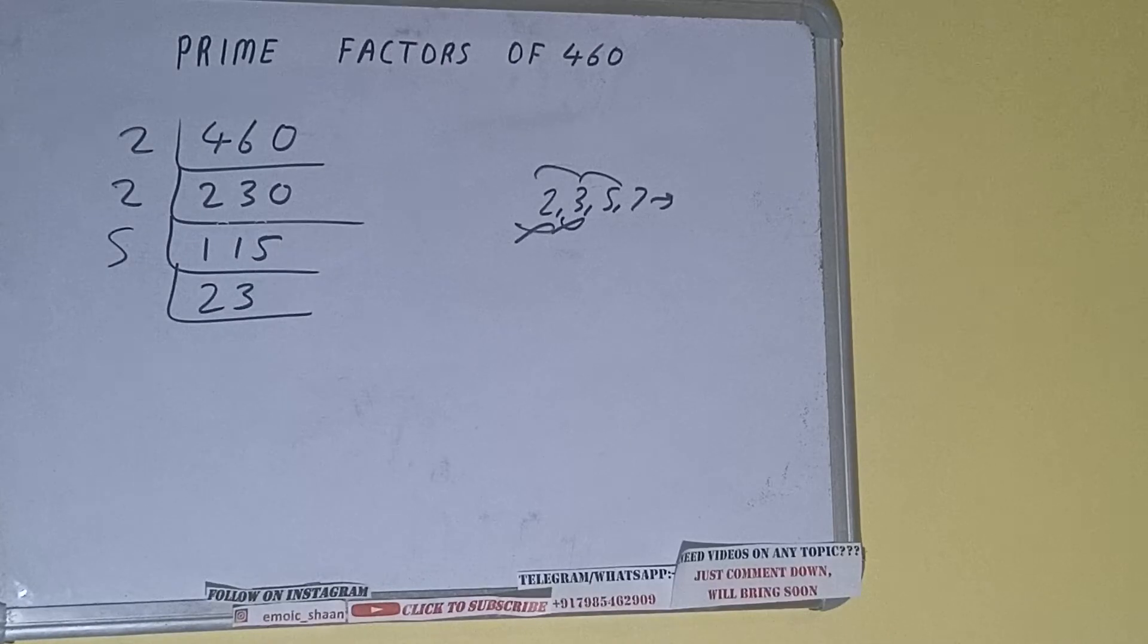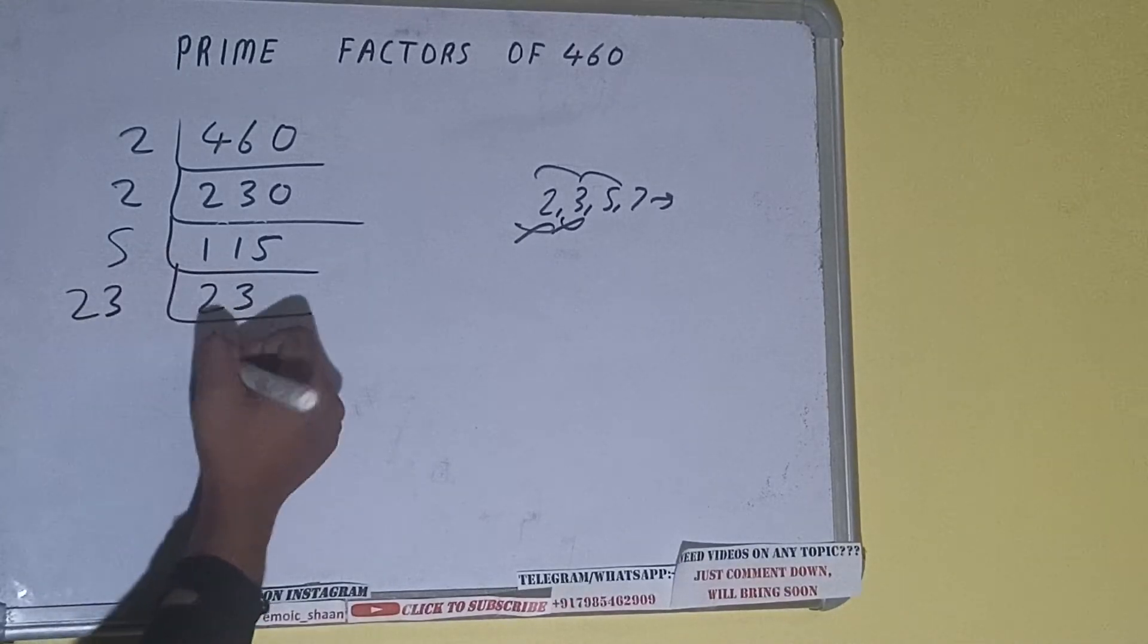Is 23 divisible by 5? The answer is no and note that 23 is also a prime number. So it is only divisible by itself that is 23 and once we do so we'll be getting 1.